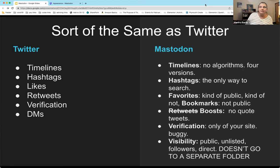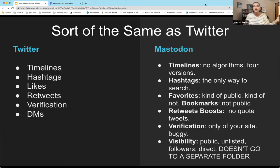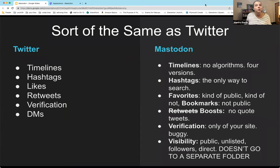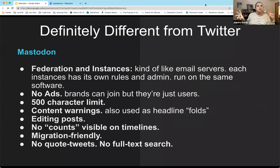There is verification in Mastodon, but it's very different. The only verification you can do is in your profile — you can link to your website, and put some HTML code on that site that Mastodon will notice and verify that website belongs to you. For DMs, there are visibility choices: you can make a post public, unlisted, only for followers, or direct/private. However, when you make something direct or private, it doesn't go into a separate folder — it just shows up in your timeline like any other posting, so it's easy to get confused. It's not necessarily the best place for private conversations.